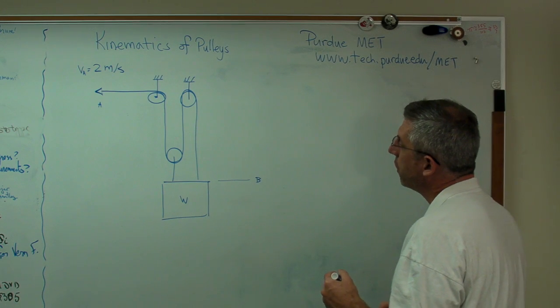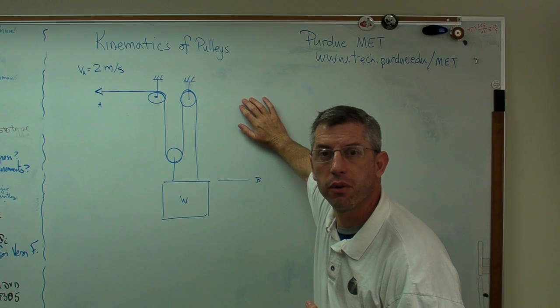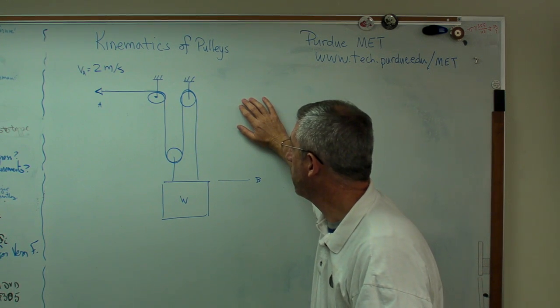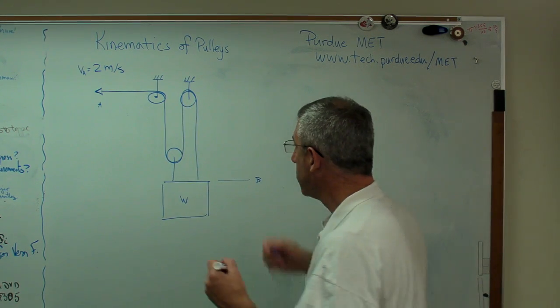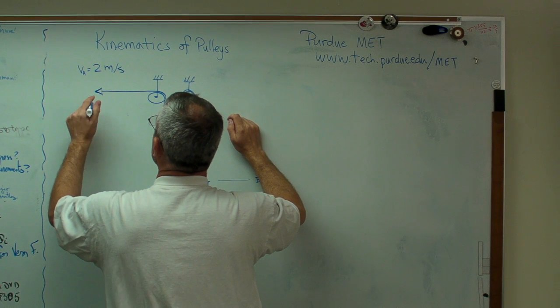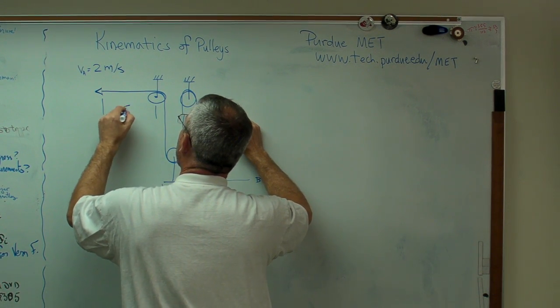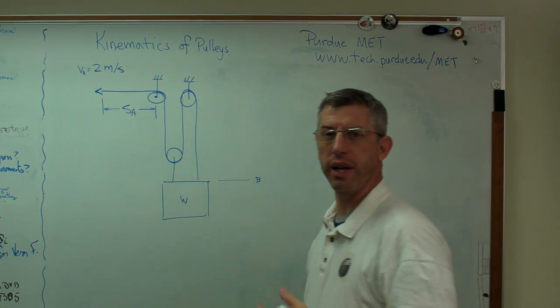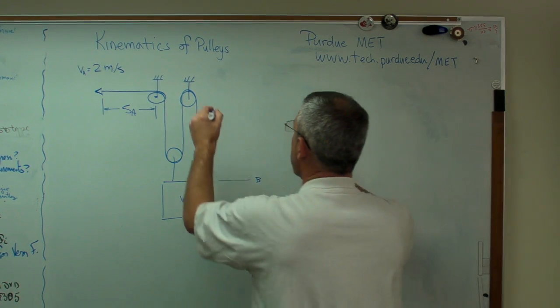So what we're going to do here, the overall strategy, is I'm going to write an expression for the length of the rope. And I'm going to write it in terms of the length of a bunch of segments. I'm just going to add them up. I'm going to call this length right here SA. S is, when you talk about lengths, S is a very common variable to use.